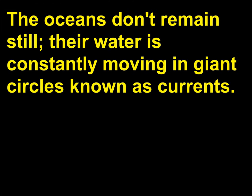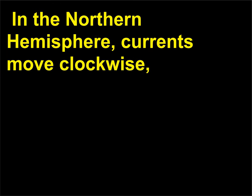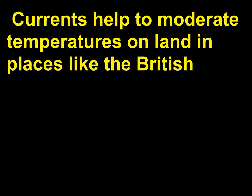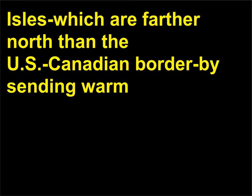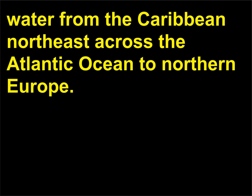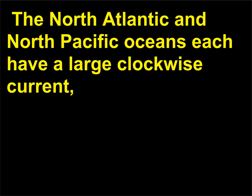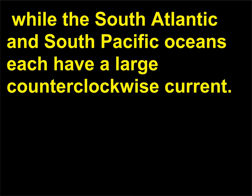The oceans don't remain still; their water is constantly moving in giant circles known as currents. In the Northern Hemisphere, currents move clockwise, while in the Southern Hemisphere they move counterclockwise. Currents help to moderate temperatures on land in places like the British Isles, which are farther north than the U.S.-Canadian border, by sending warm water from the Caribbean northeast across the Atlantic Ocean to Northern Europe. A current known as the Antarctic Circumpolar Current circles the southern continent. The North Atlantic and North Pacific Oceans each have a large clockwise current, while the South Atlantic and South Pacific Oceans each have a large counterclockwise current.